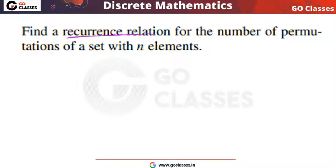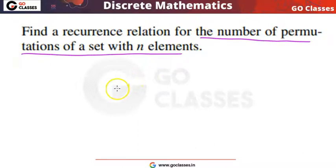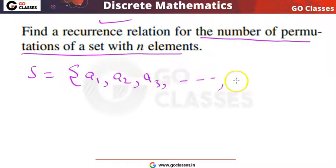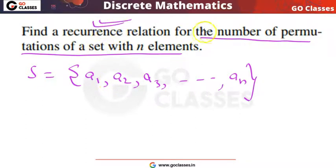Find a recurrence relation for the number of permutations of a set of n elements. Let's assume we have a set with n elements: a1, a2, a3, and so on up to an. We want to find the recurrence relation to count the number of permutations of this set.